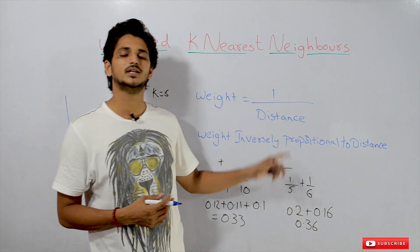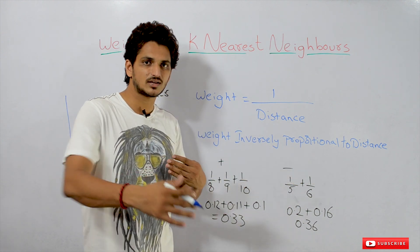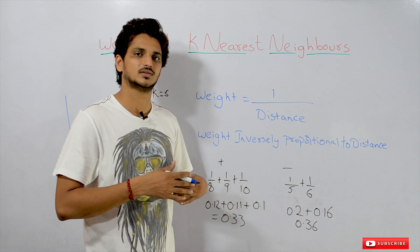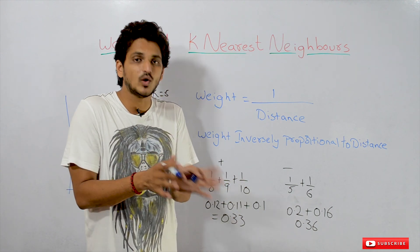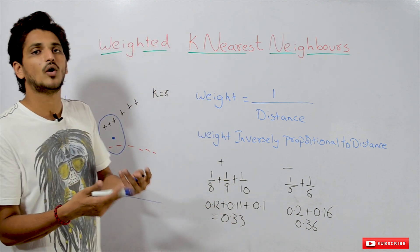It's using this equation: weight equals 1 by distance. Means it is inversely proportional to distance. As distance increases, weight decreases. As distance decreases, weight increases. Means we are giving highest weight to nearest point.